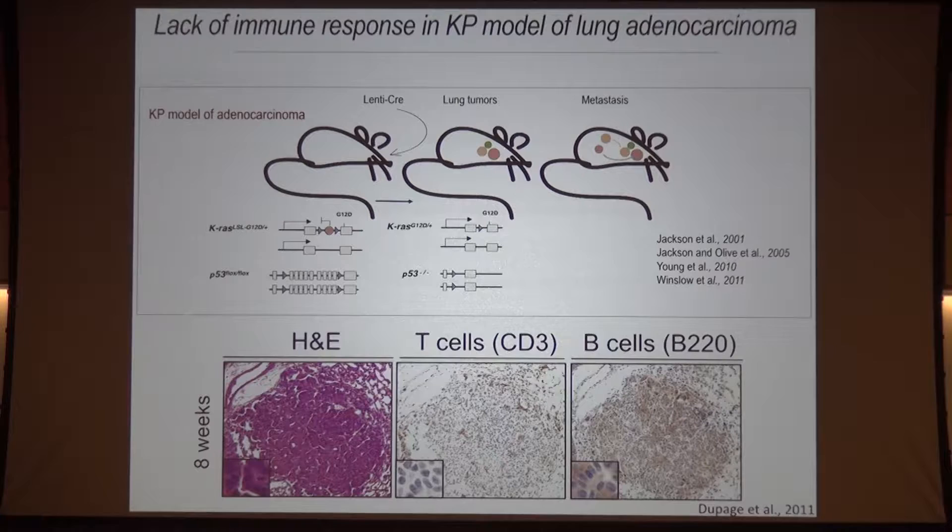For the purposes of this talk, the central question is: does the immune system see these tumors as they're developing? That would be a prerequisite for us to study the interactions between the immune system and the developing tumor. Michael Dupage, now several years ago, asked this question, and he came to the startling conclusion that they do not. If we look for the presence of B cells or T cells in the tumor microenvironment, we find very little evidence of an immune response to these cancers.